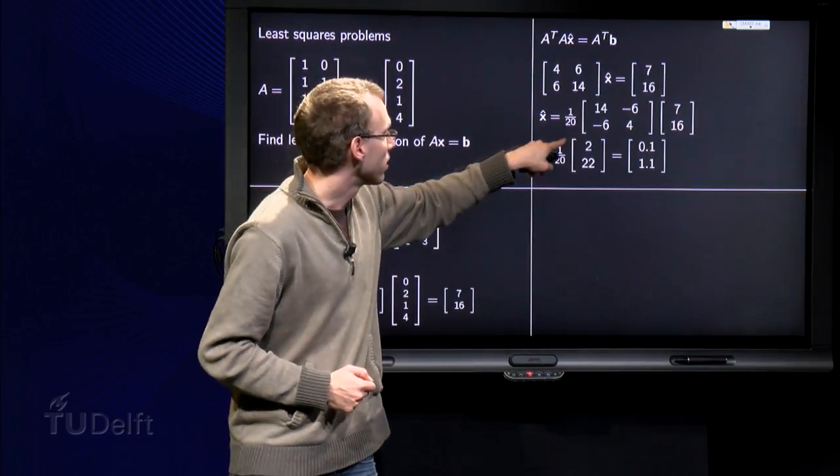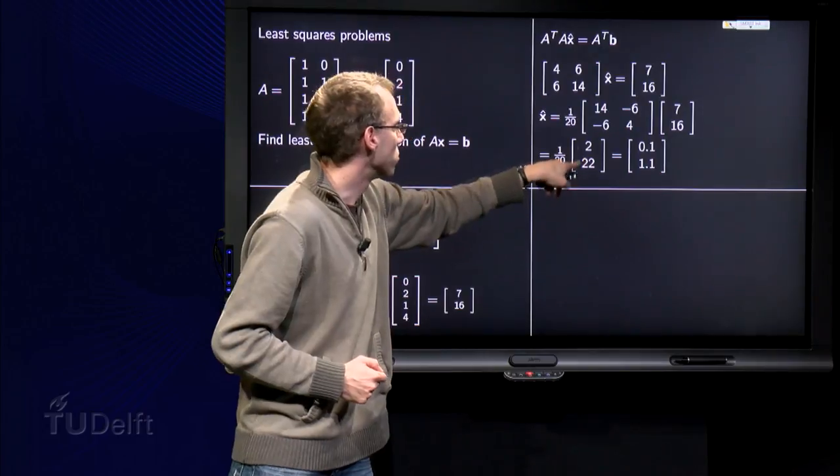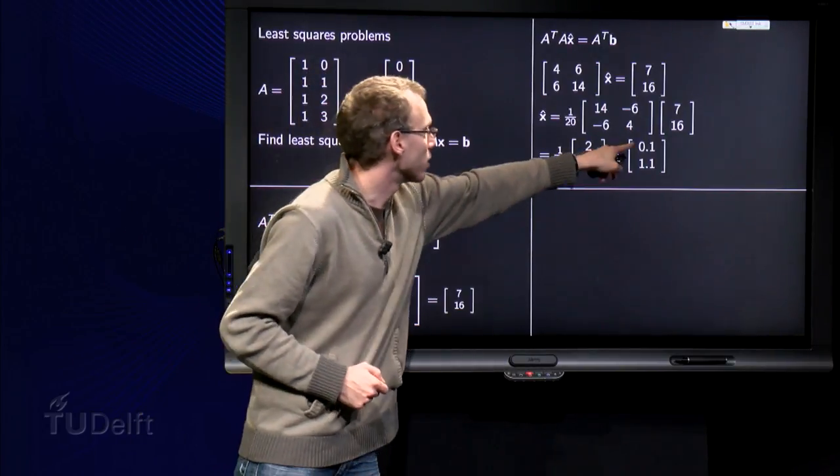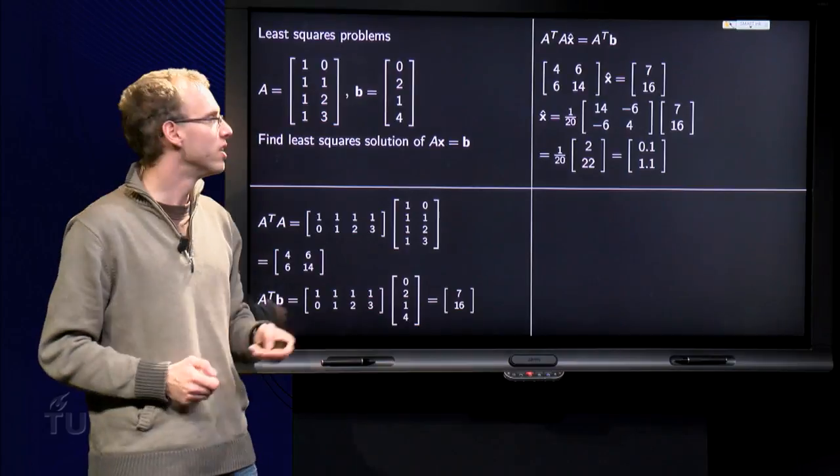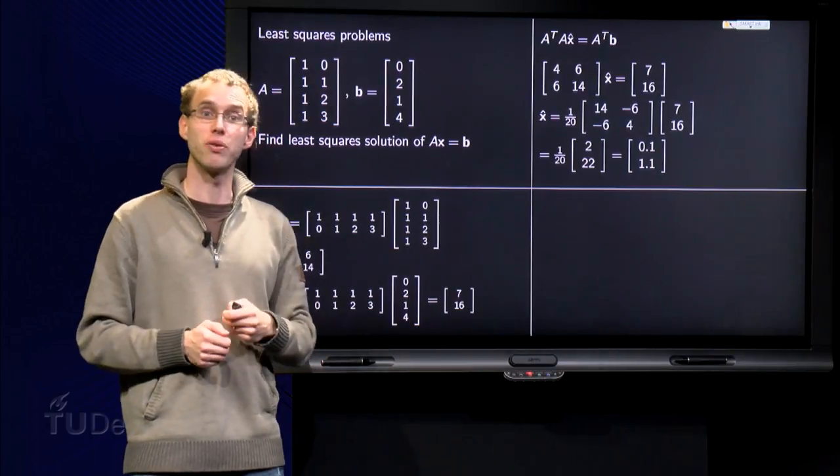And we compute this product over here: 2 and 22, divide by 20, we get 0.1 and 1.1. So there we have found our least squares solution.